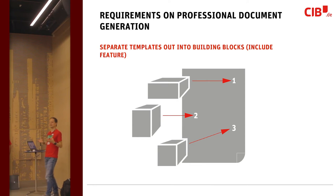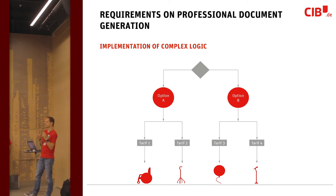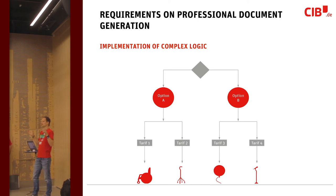You want to include stuff, master the document, and plug in small pieces. You also want to implement complex logic. While you are processing a document and generating five million copies for your annual invoices or statements, you want to customize that. Something comes out of the database, something else comes out of the database, and you want to check what that is and then programmatically act on it and do different things.